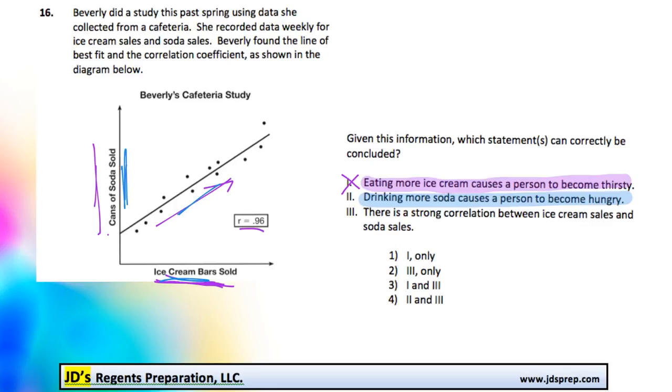But again, that doesn't mean they're related. In a similar example as before, what causes a person to become hungry is them not eating over a period of time. Drinking pop doesn't make someone hungry. That doesn't make sense.